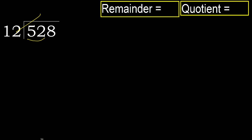But not greater. 12 multiplied by 5 is 60, which is greater. 12 multiplied by 4 is 48, which is not greater. Ok, subtract. 52 minus 48 is 4.